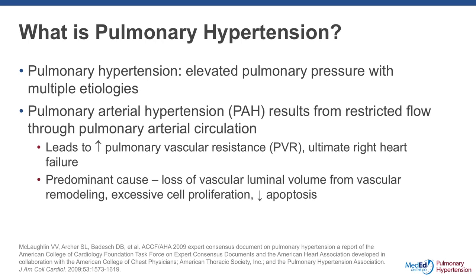Pulmonary arterial hypertension, on the other hand, is a very small subgroup of the larger, more common pulmonary hypertension, and really results specifically from restricted blood flow through a compromised — usually the small pulmonary arterioles — which leads to a series of hemodynamic consequences including increasing pulmonary artery pressure, increasing pulmonary vascular resistance, and eventually a decreasing cardiac output and frank right-sided congestive heart failure, which is eventually the cause of death in this entity.